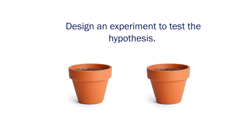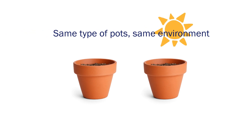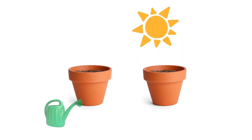I'm going to design my experiment. First, I'll get two types of soil and put them in identical pots. One soil will be nitrogen-poor, the other nitrogen-rich. I will put dandelion seeds in both pots, place them in the same location, and give them the same amount of water and sunlight.